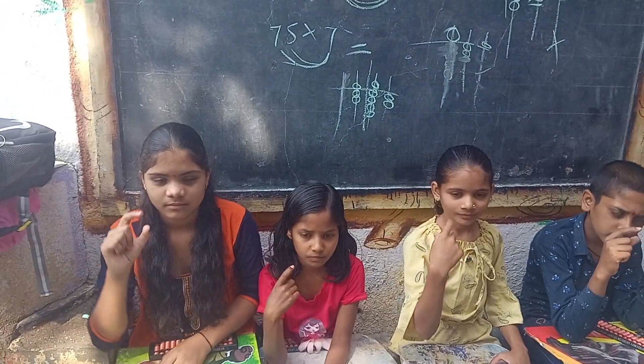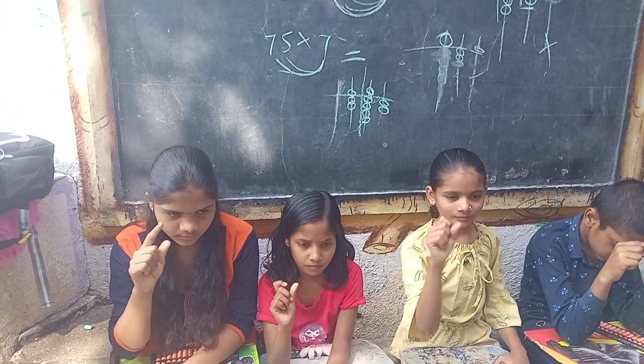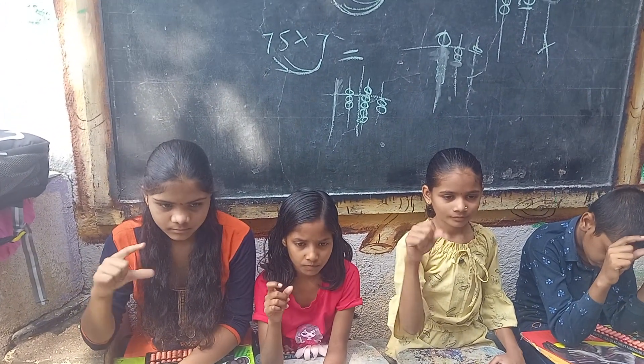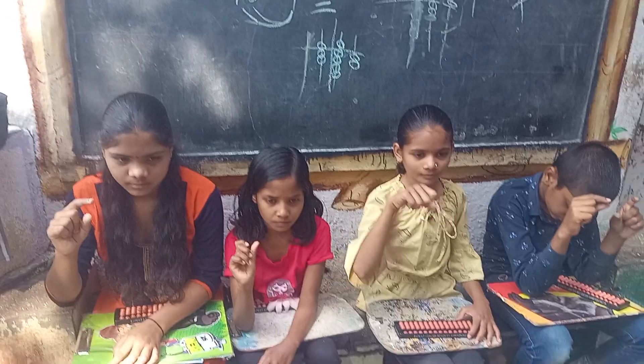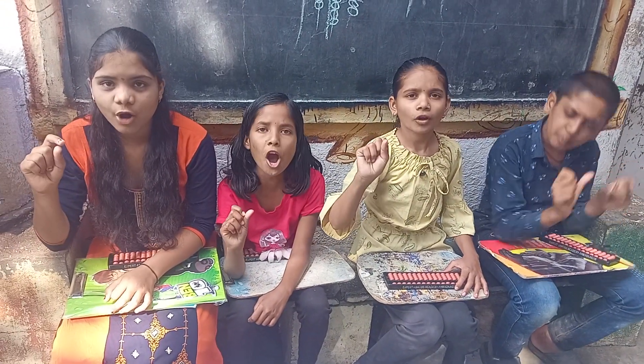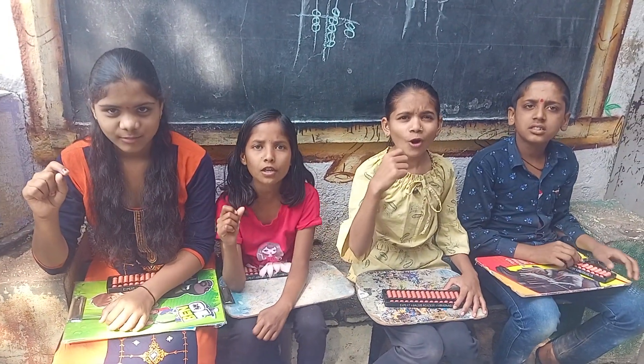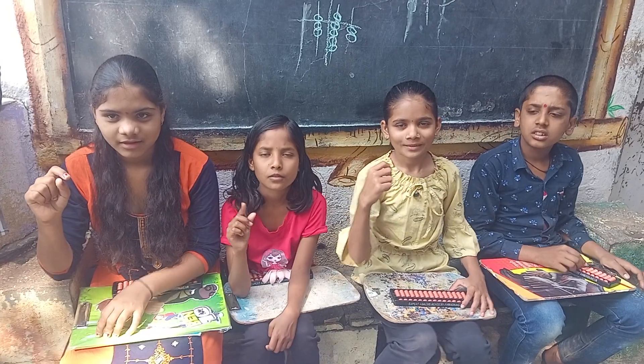6 plus 5, minus 9, plus 8, minus 6. That is 4. 4, 4.